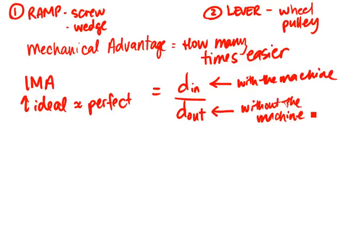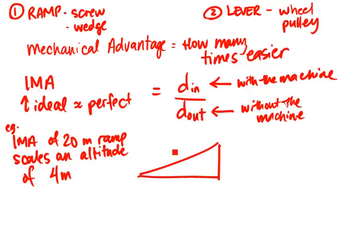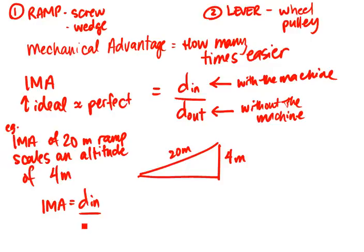Looking at the first example: what is the IMA of a 20-meter ramp that scales an altitude of 4 meters? If I draw a quick sketch — a 20-meter ramp scaling an altitude of 4 meters — I'm asking for the IMA. So IMA equals distance in divided by distance out. I have to put in 20 meters with the machine.